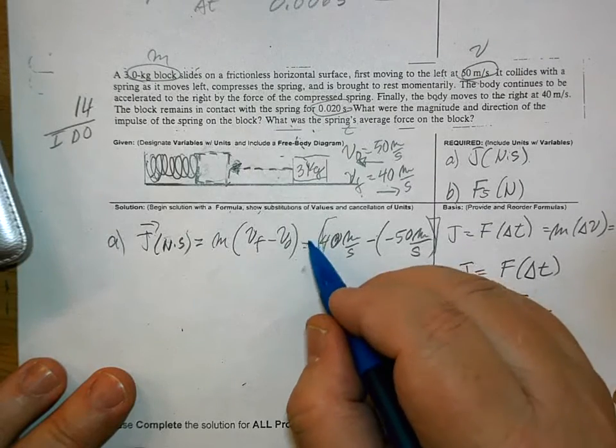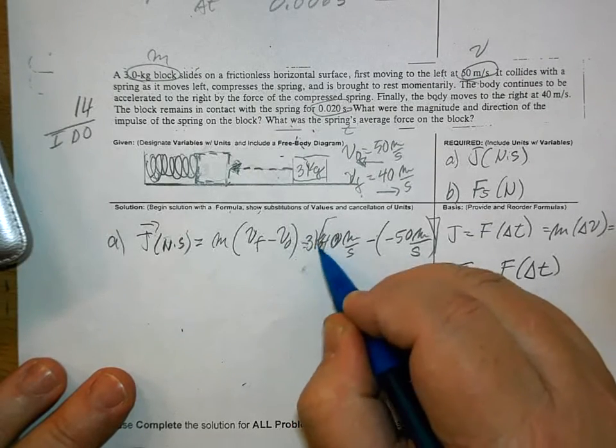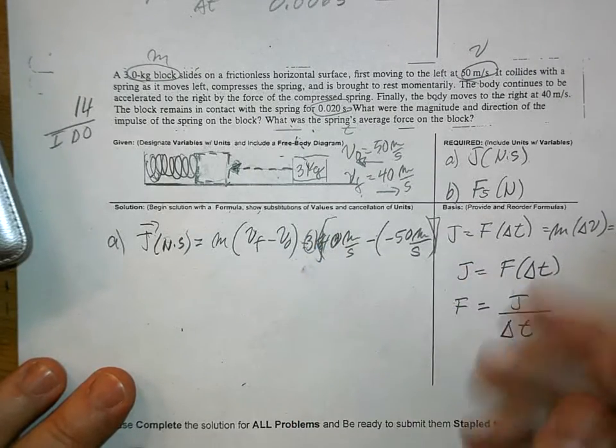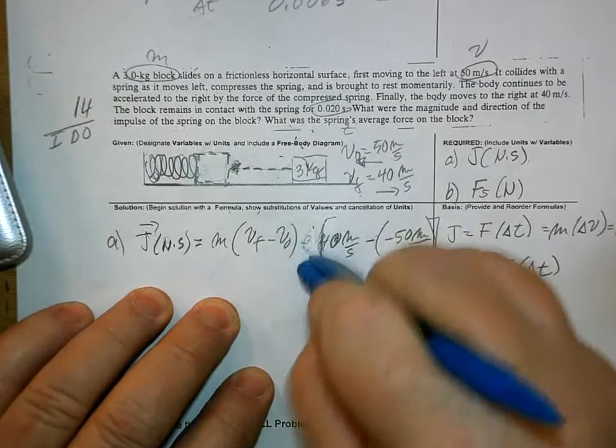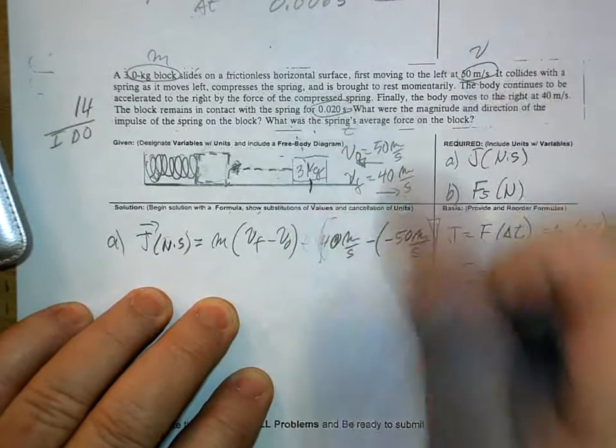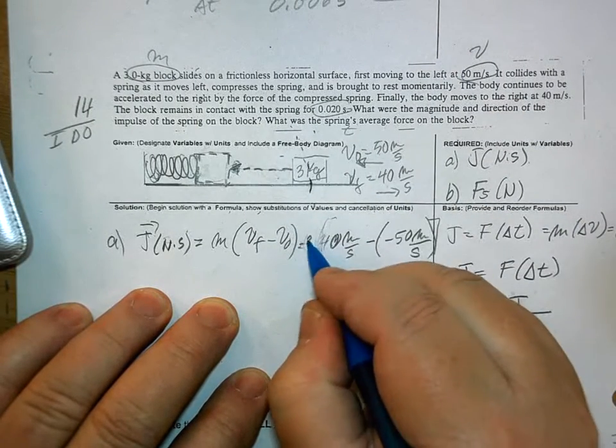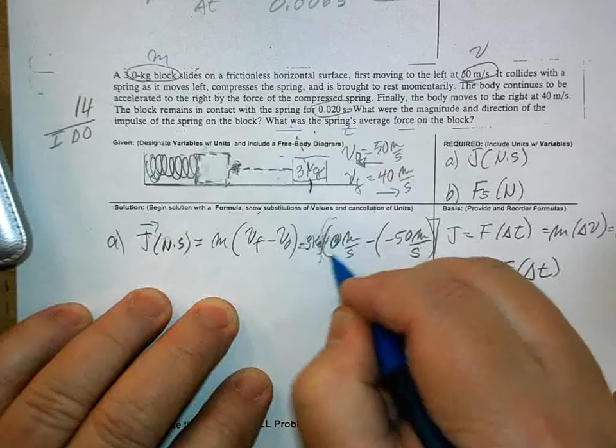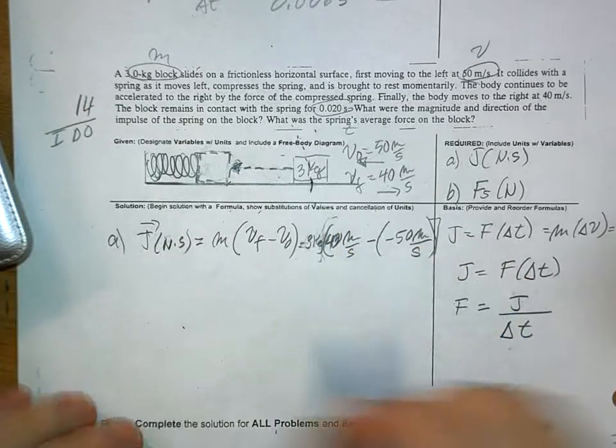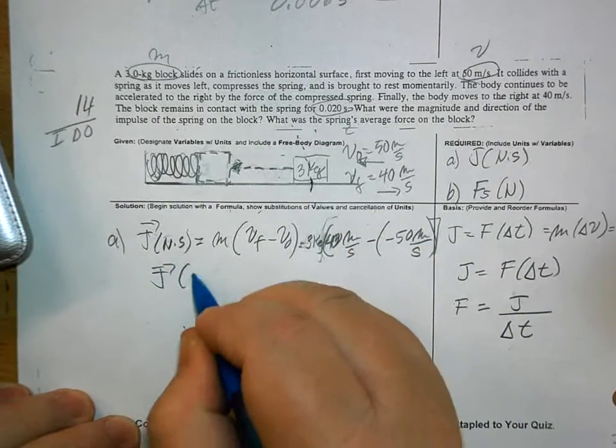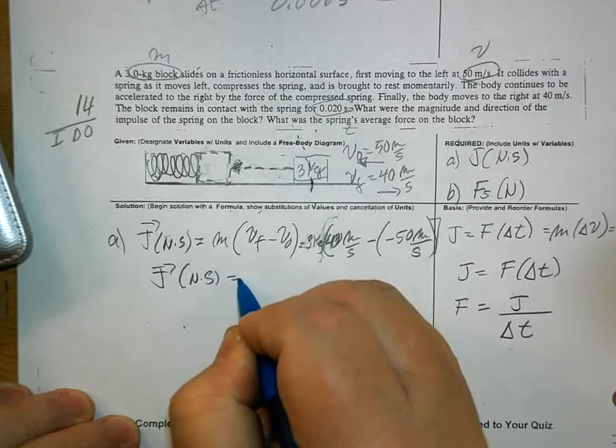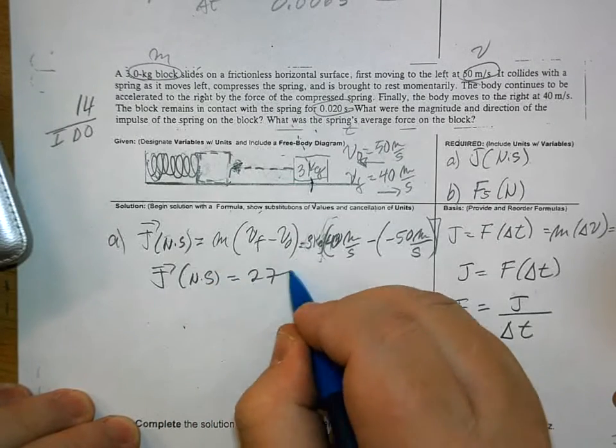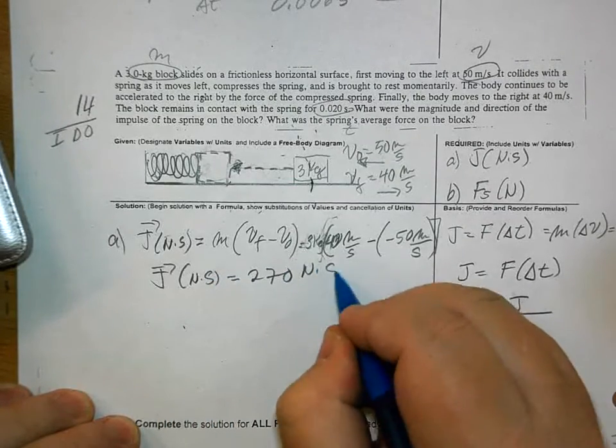Times the mass, which is 3 kilograms. 3 kilograms times 40. And the answer here is in Newton seconds, 270 Newton seconds.